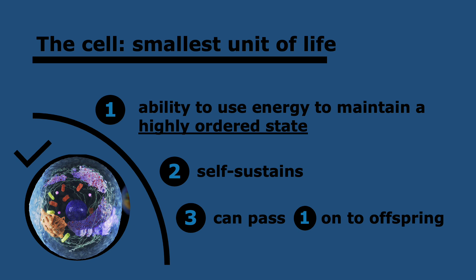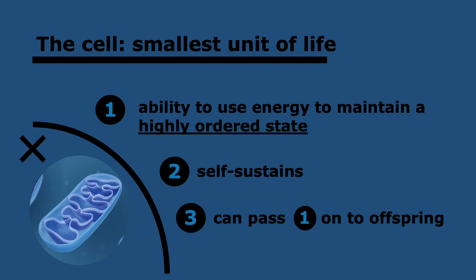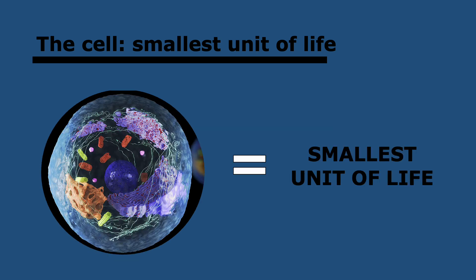Also, cells can self-sustain, meaning they are able to live by themselves without needing anything else — there are organisms that are just one cell, like bacteria. The third condition is that they must have the ability to pass the first ability onto offspring, and cells can do this because they can divide and form new independent cells. If we go deeper into a cell — for example, a mitochondrion — mitochondria can't self-sustain because they need a cell to exist. Therefore, we define cells as the smallest unit of life. There can be smaller structures, but they're not living things because they don't meet the three conditions.